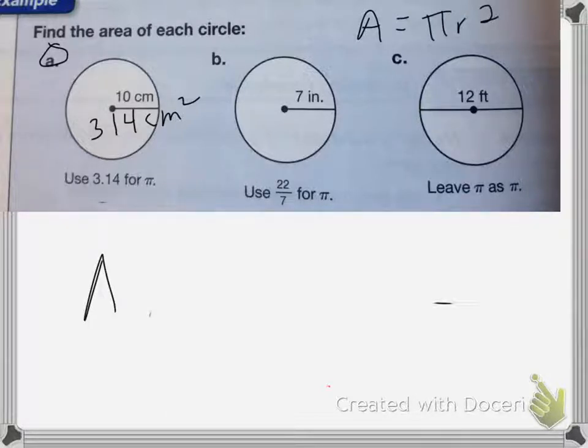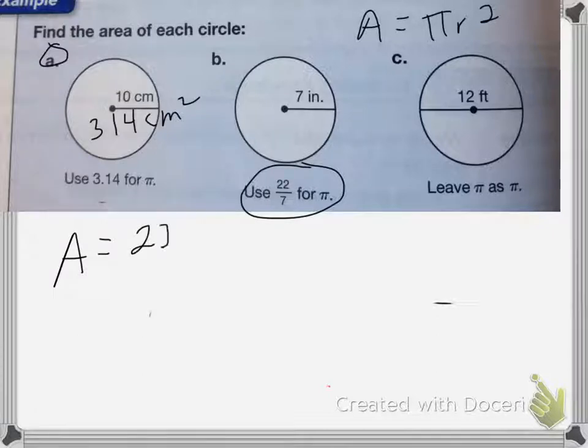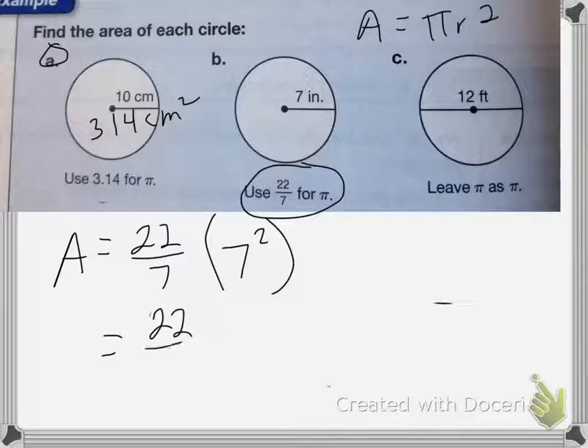So that's going to be pi – and we're using 22 sevenths for pi – times 7 squared. So that's going to equal 22 sevenths times 49.